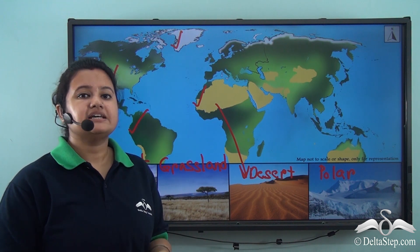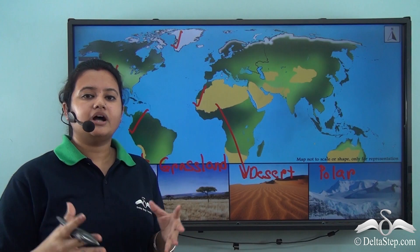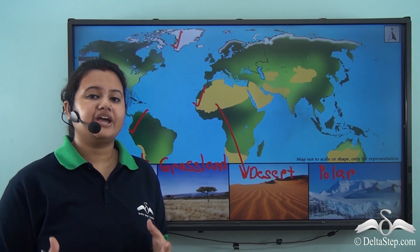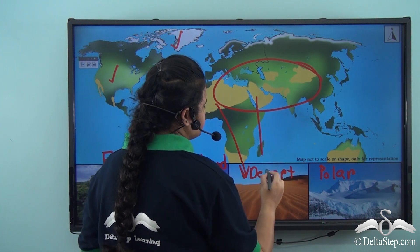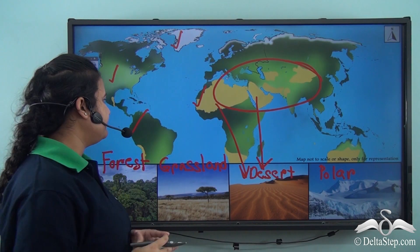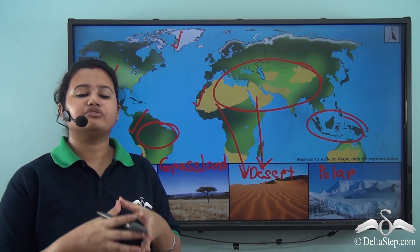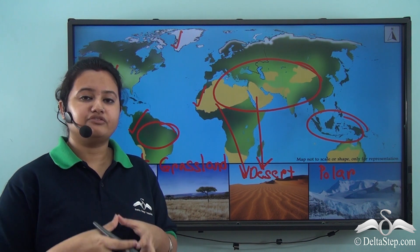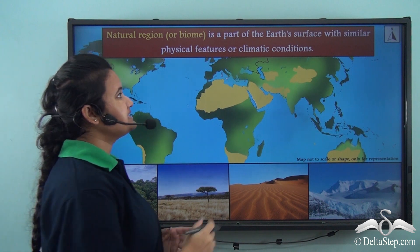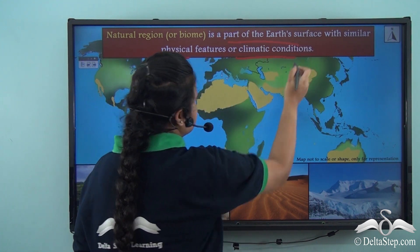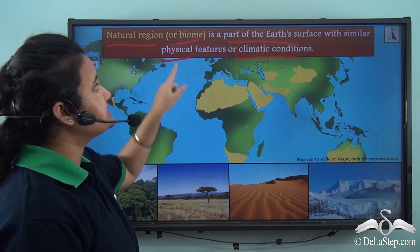From this map we understand that the geographical features or climatic conditions prevailing in different parts of the world are not uniform. We also understand that some parts of the earth's surface share similar climatic conditions or geographical features. A part of the earth's surface with similar physical features or climatic conditions is known as a natural region. Another name for a natural region is biome.